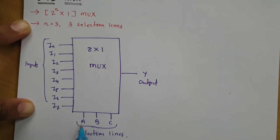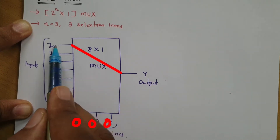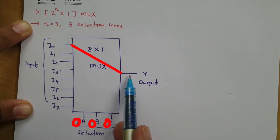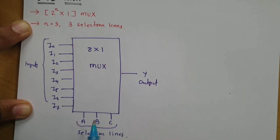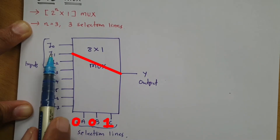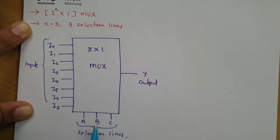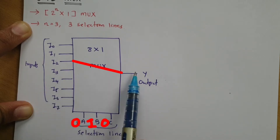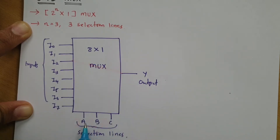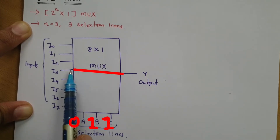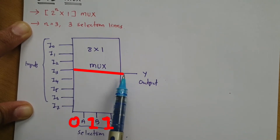When A, B, C is 0, 0, 0, then I0 gets transferred to output Y. When A, B, C is 0, 0, 1, then I1 gets transferred to output Y. When A, B, C is 0, 1, 0, then I2 gets transferred to output Y. When A, B, C is 0, 1, 1, then I3 gets transferred to output Y.